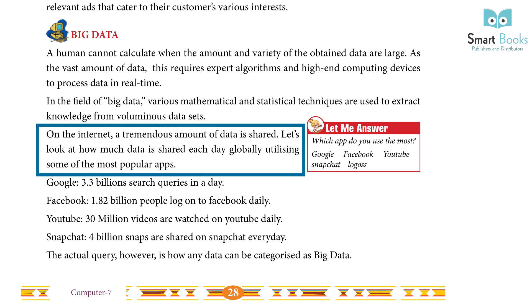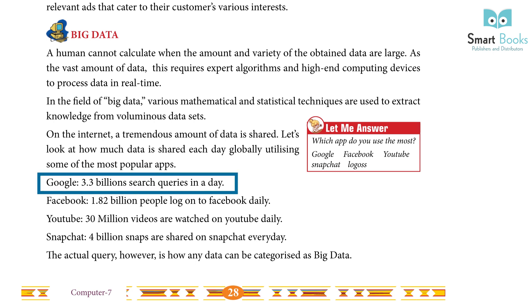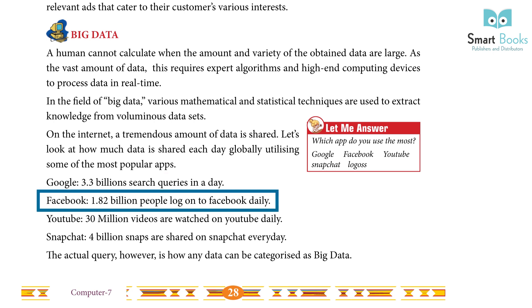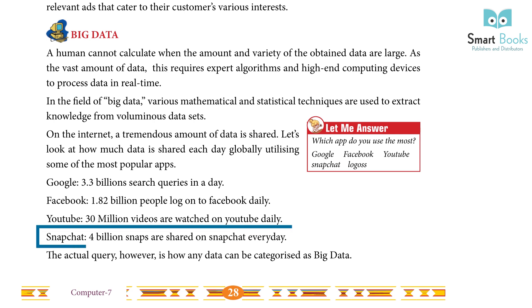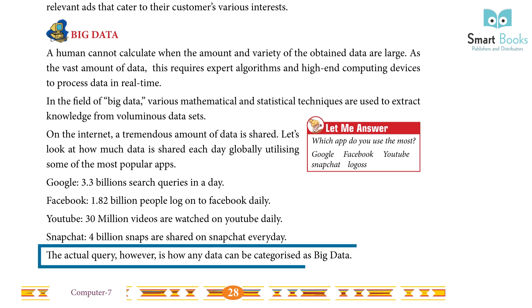On the internet, a tremendous amount of data is shared. Let's look at how much data is shared each day globally using some of the most popular apps. Google: 3.3 billion search queries in a day. Facebook: 1.82 billion people log on daily. YouTube: 30 million videos are watched daily. Snapchat: 4 billion snaps are shared every day.